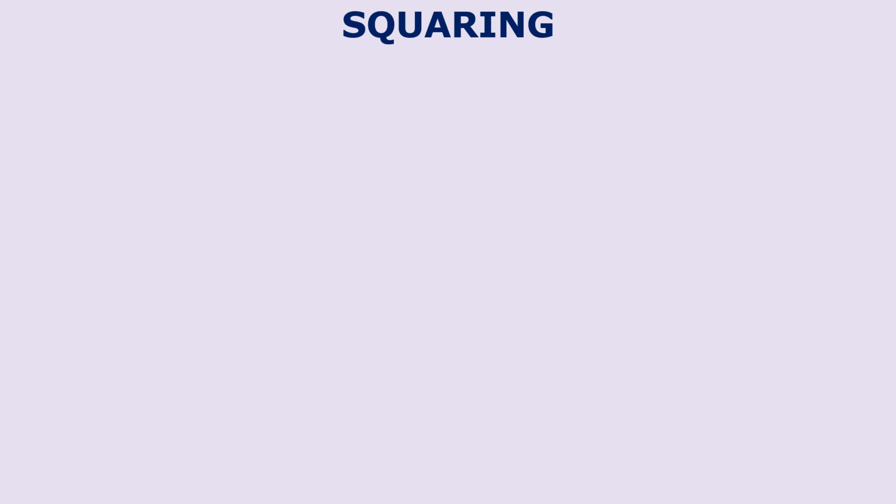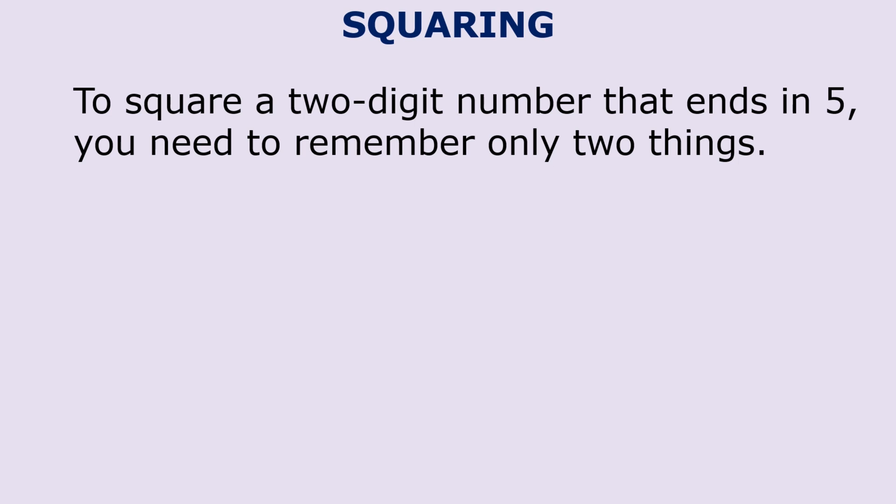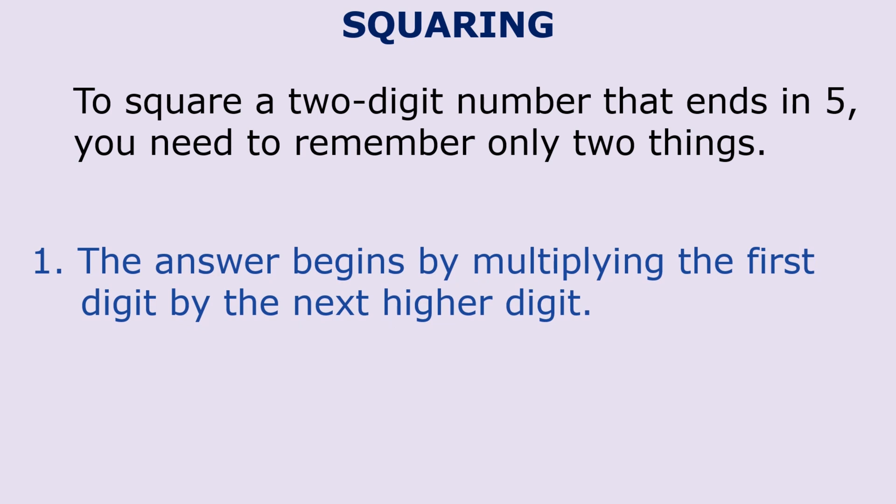Now let's learn a simple method that will enable you to easily calculate the square of any 2 digits or 3 digits or higher numbers. That method is especially simple when the number ends in 5. So let's do that trick now. To square a number that ends in 5, you need to remember only 2 things. The answer begins by multiplying the first digit by the next higher digit and the answer ends in 25.